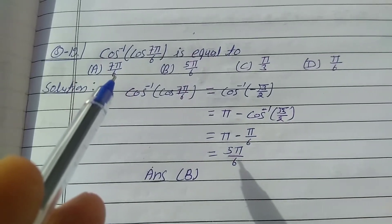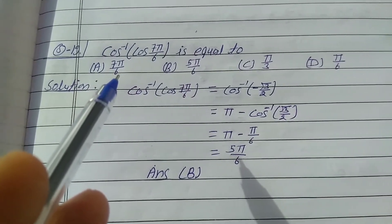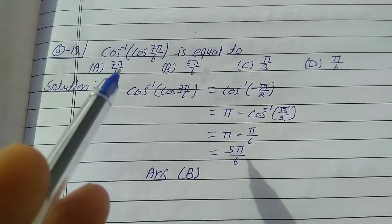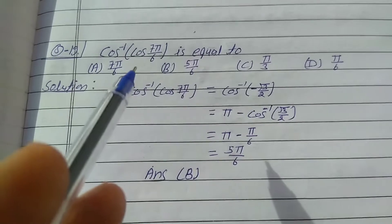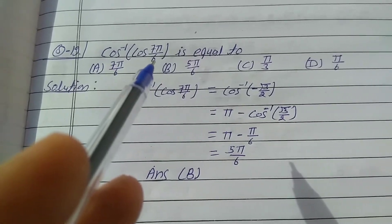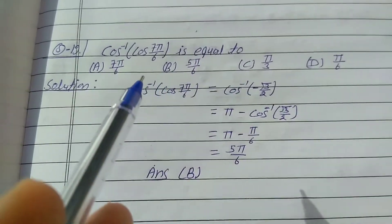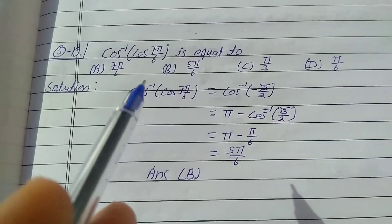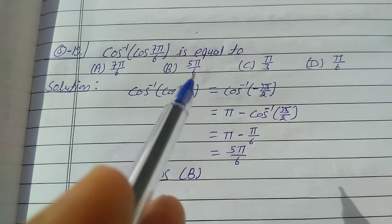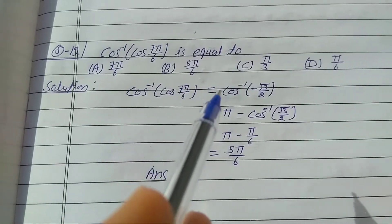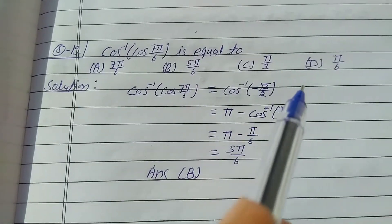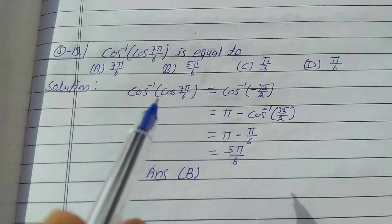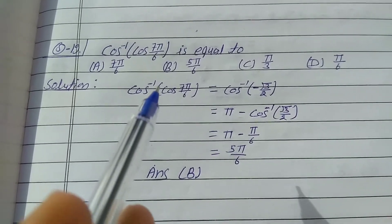Question number 19, exercise 2.2, class 12th: cos inverse of cos(7π/6) is equal to — (a) 7π/6, (b) 5π/6, (c) π/3, (d) π/6. Solution: take cos inverse of cos(7π/6).